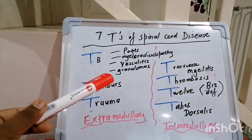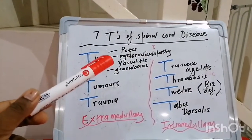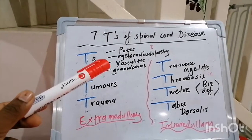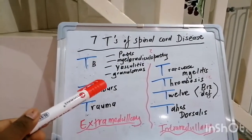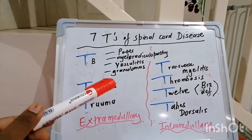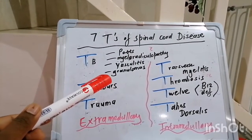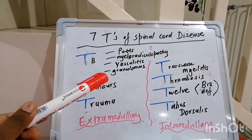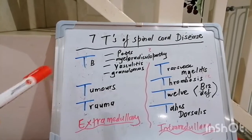TB can also attack the spine in other ways, like causing a myeloradiculopathy, inducing vasculitis, and also causing space-occupying lesions like granulomata and tuberculomas in the spine, which cause compression.